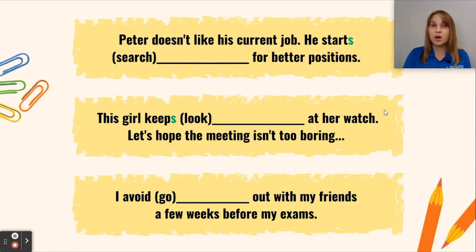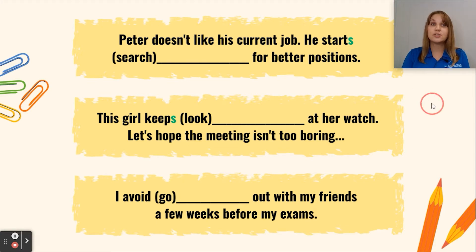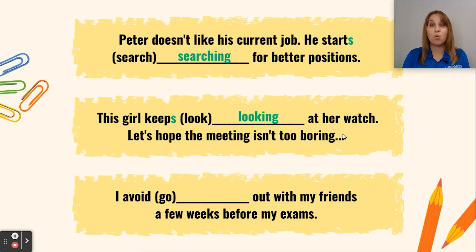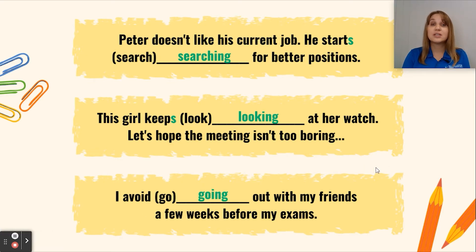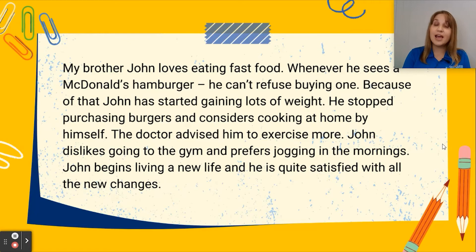Let's check which form we use here. 'Peter doesn't like his current job — he starts searching for better positions.' 'This girl keeps looking at her watch — let's hope the meeting isn't too boring.' 'I avoid going out with my friends a few weeks before my exams.'